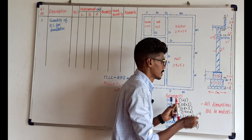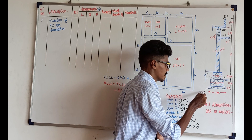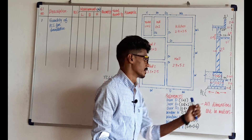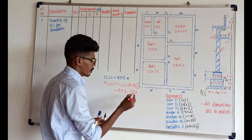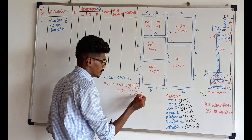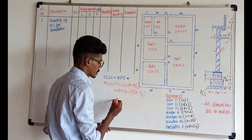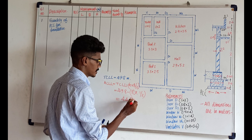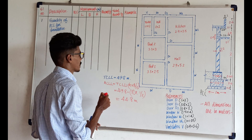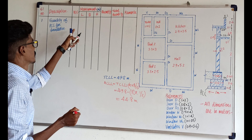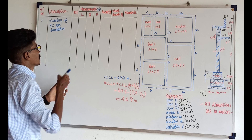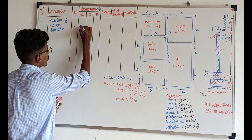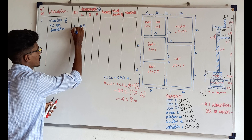So B is the quantity of PCC — Plain Cement Concrete for the foundation. What is PCC? B by 2 means 1 by 2, which is equal to 44.8 meters. The answer is 44.8 meters — this is the center line length.